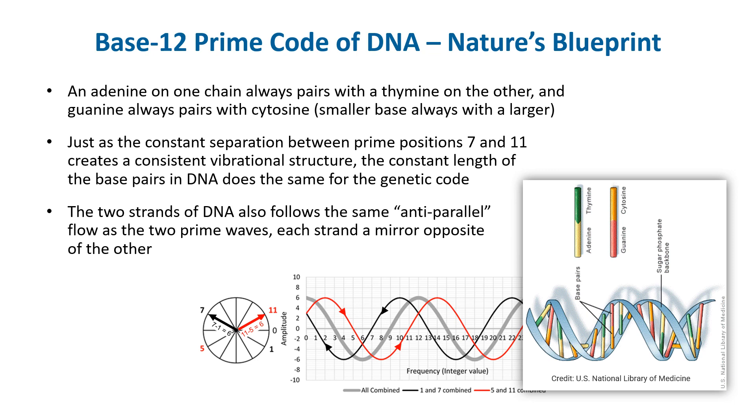Further, like the two prime waves of the prime vibration, the two strands of DNA are anti-parallel copies of each other running in opposite directions. This is how DNA clones itself throughout an organism. Interestingly, each full turn of the DNA double helix also follows the golden ratio proportion of approximately 1.618 to 1 in terms of length versus height of 34 angstroms long by 21 angstroms high.